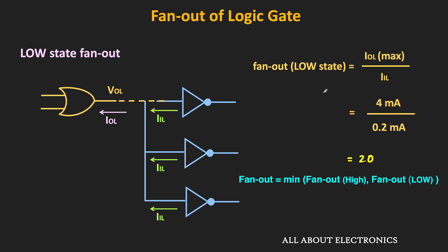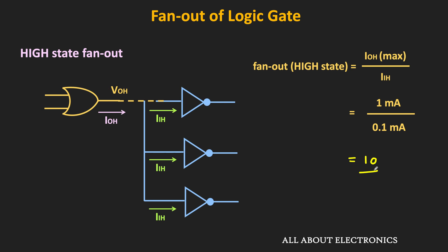Out of the two fanout values, whichever is the minimum should be considered as the fanout for the logic gate. In this case, for the low state fanout the value is equal to 20, while for the high state fanout the value is equal to 10. So the minimum from the two fanout values is equal to 10. That means for the given OR gate, the fanout is equal to 10. So in this way, if we know the current parameters for the logic gates, we can easily find the fanout value. In short, fanout is the maximum number of loads or the maximum number of logic gates that can be connected at the output of the logic gate.